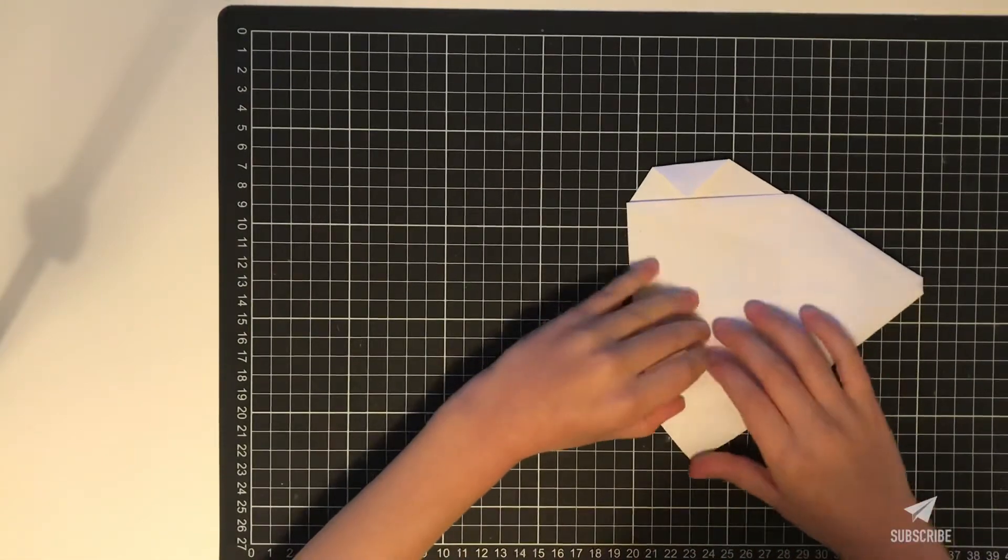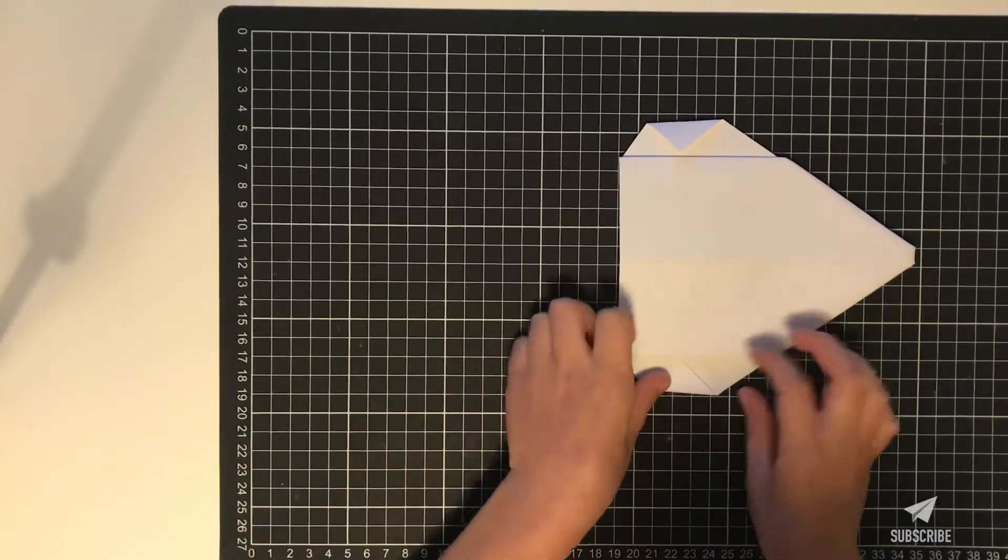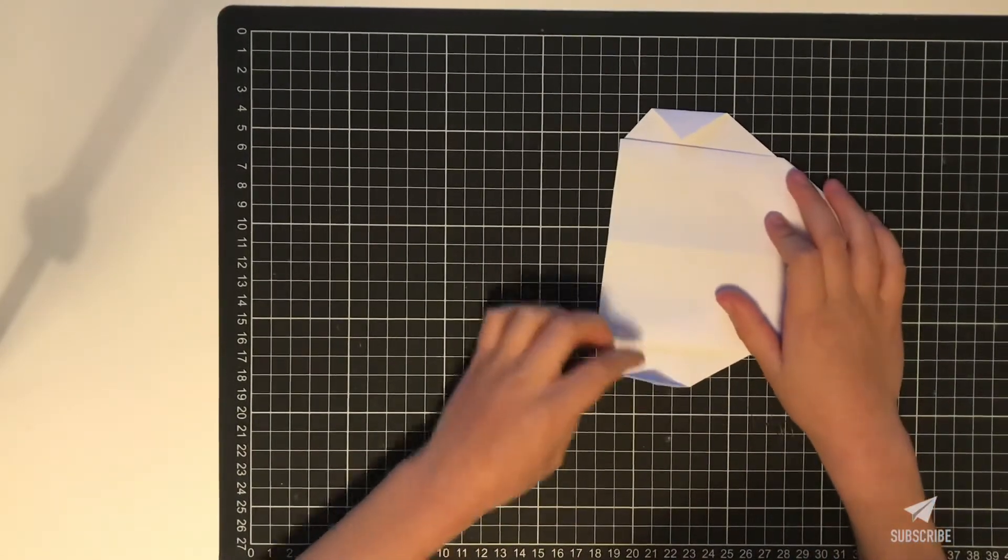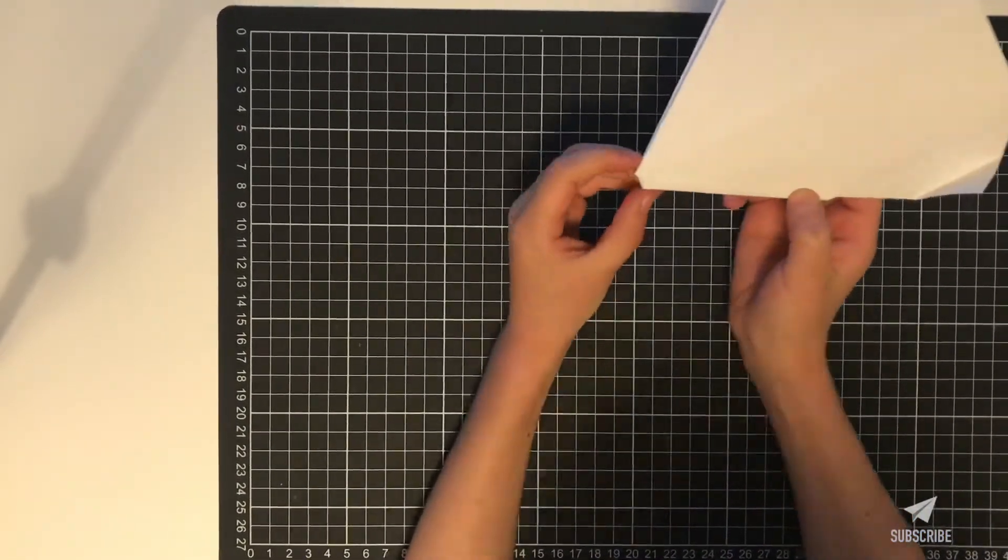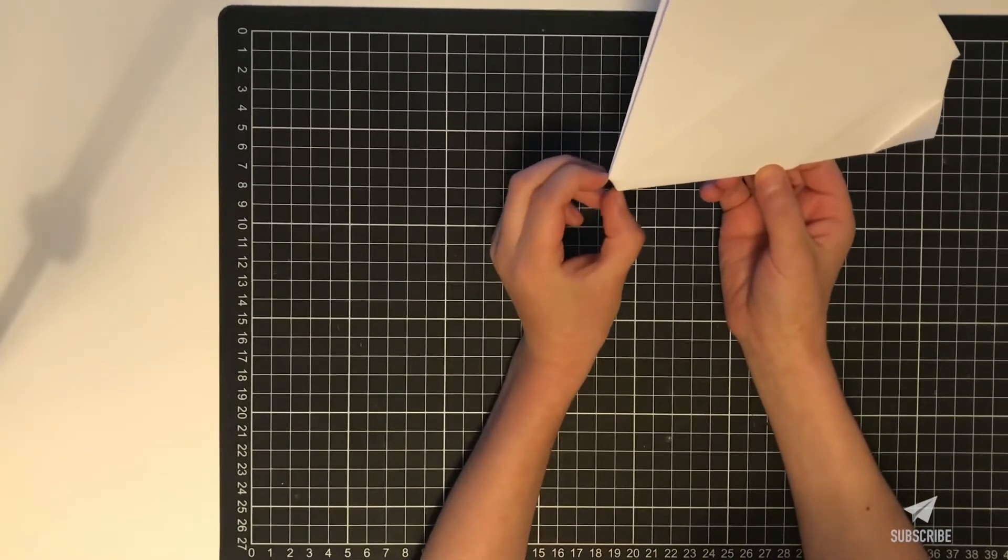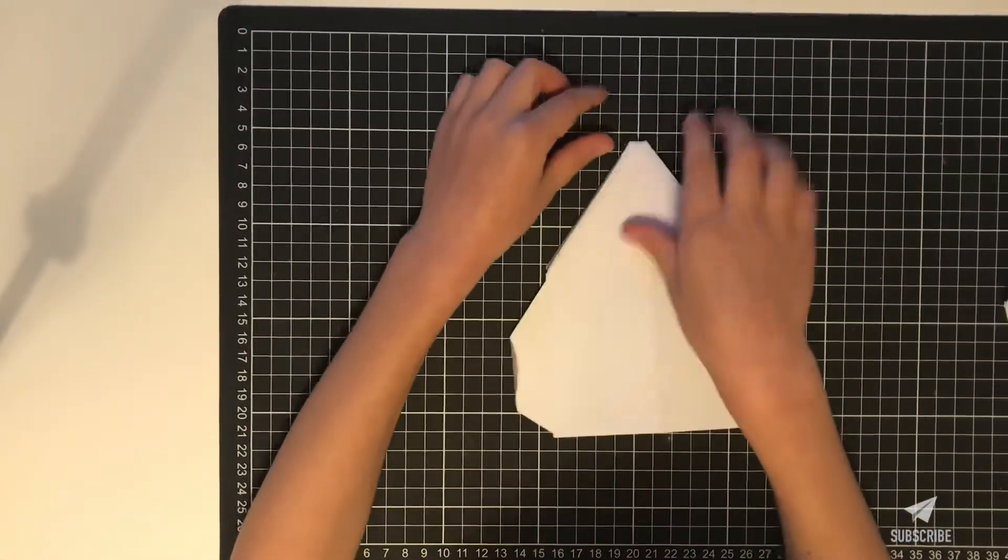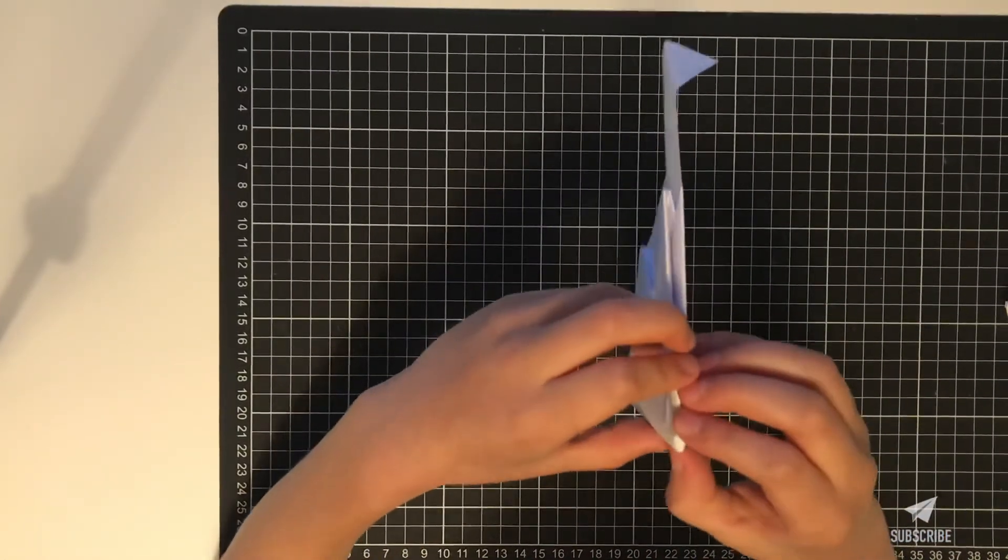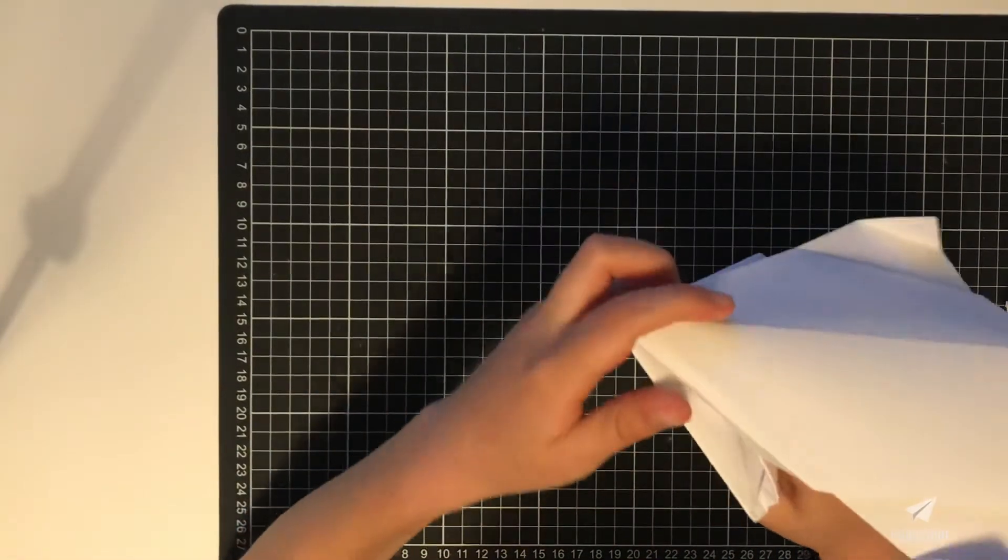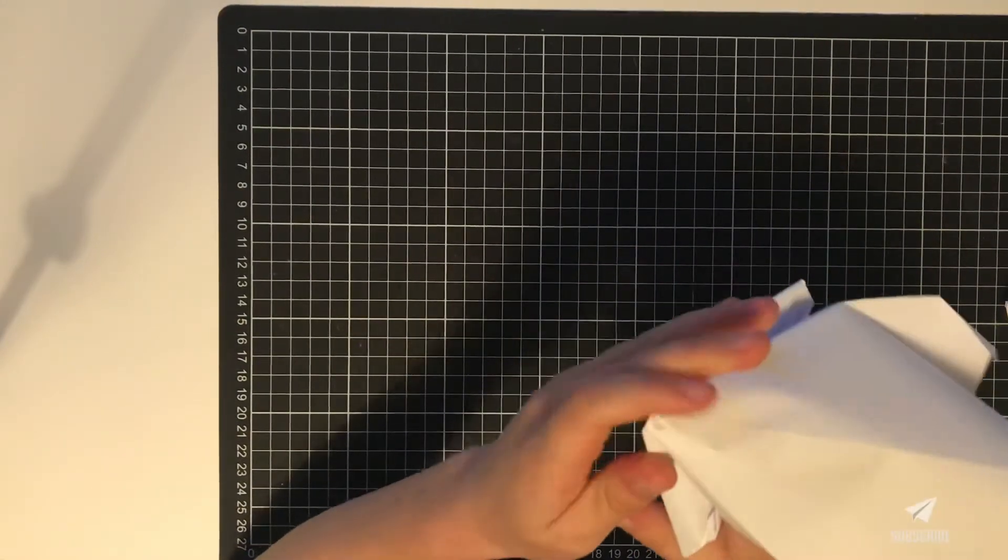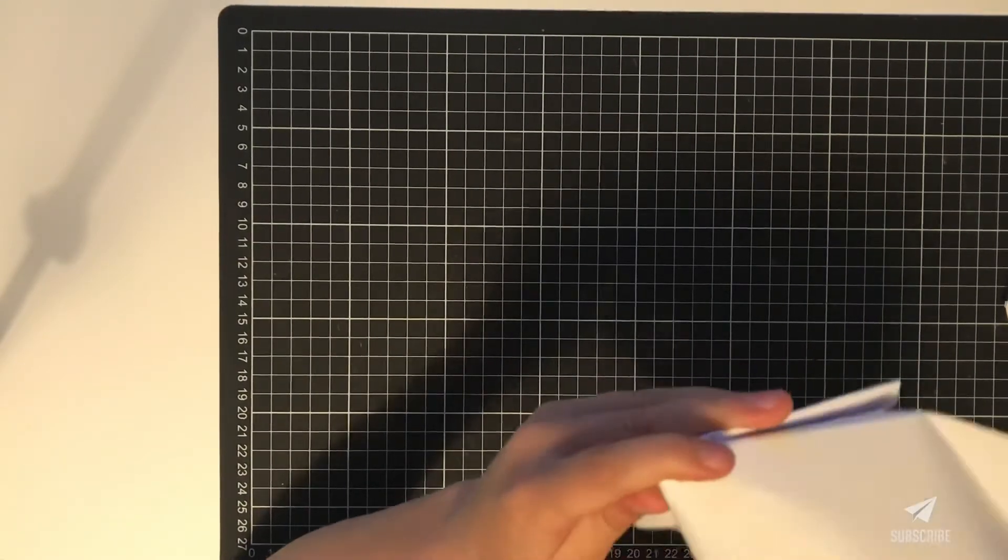Now we're going to fold the edges to the line here. Now it might look like this or with a sharper front like this. The reason why it has a flat front is because I didn't flatten it properly. That's the only problem with this plane. You have to put your finger in here so it gets a proper point.